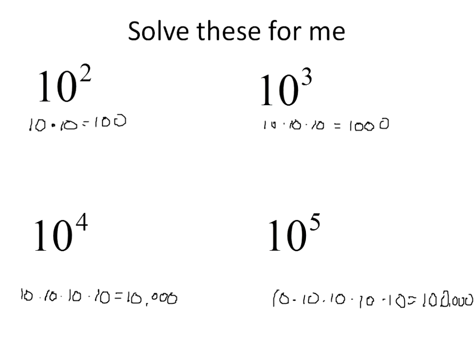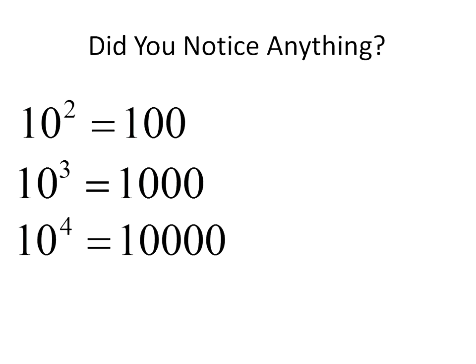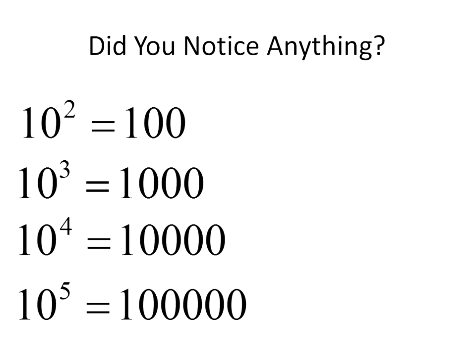Now, I don't know if you notice any patterns with this. We had said 10 to the power of 2 is 100; 10 to the power of 3 is 1,000; 10 to the power of 4 is 10,000; 10 to the power of 5 is 100,000. For me personally, I notice that the power is the number of zeros — 3 power, 3 zeros; 4 power, 4 zeros; 5 power, 5 zeros.